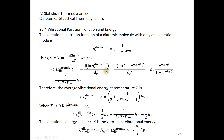We evaluate the average energy as negative d ln q over d beta. Plugging in the expression for q, the negative sign disappears because 1 minus e to the power of negative h nu beta is in the denominator. Using the chain rule: first the logarithm gives the reciprocal of the expression, then the derivative of the exponential term gives negative h nu. Multiplying by the outer negative sign, the average vibrational energy is h nu times e to the power of negative h nu beta over 1 minus e to the power of negative h nu beta.